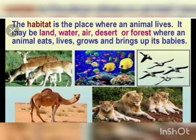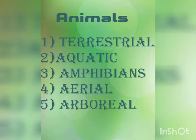The habitat is a place where an animal lives. It may be land, water, air, desert or forest — where an animal eats, lives, grows and brings up its babies. Based on the habitat, animals can be placed in 5 major groups.